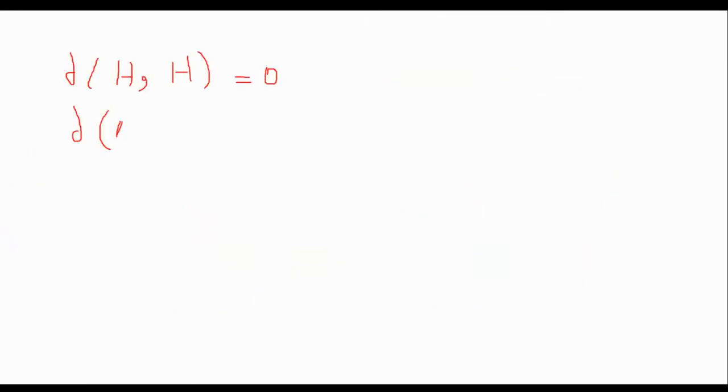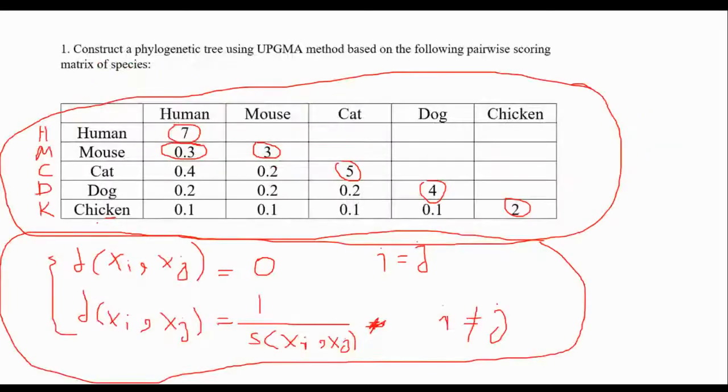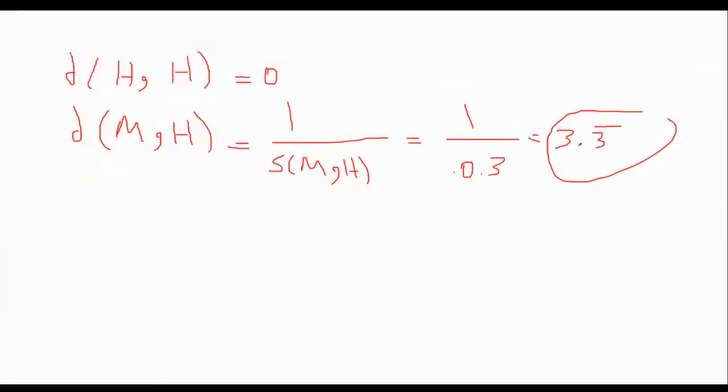So here we will have mouse and human. This one is equal to one over the score of mouse and human. So it will be one over 0.3, which is equal to 3.3 and it goes on to infinity. So as you can see first we need to show the general formula like this and one by one for each one of the cell of the distance matrix you should again write the formulas one by one and fill the table.